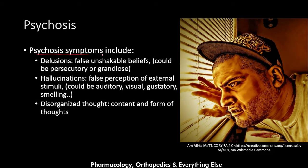Psychosis symptoms include delusions, hallucinations, and disorganized thoughts. Delusions are false, unshakable beliefs — they could be persecutory or grandiose. With delusions, the patient holds false beliefs they completely agree with. Persecutory delusions are the most common type — for example, a patient feeling that someone is after them and wants to hurt them. Grandiose delusions are when the patient feels very powerful, like they are a prophet or know everything about the world.